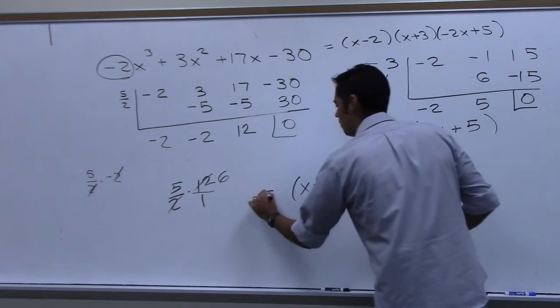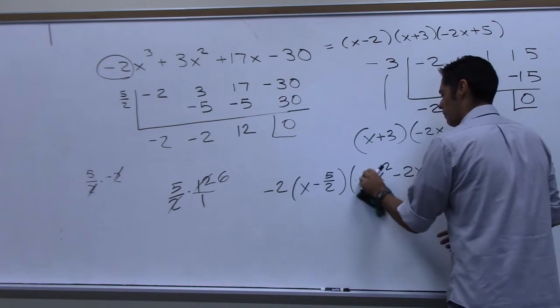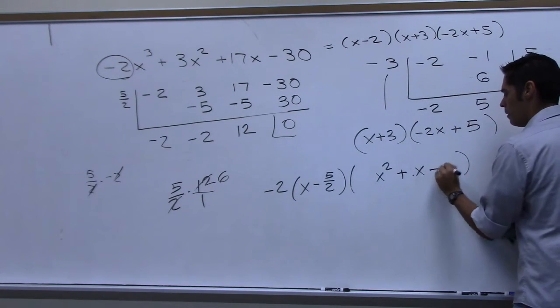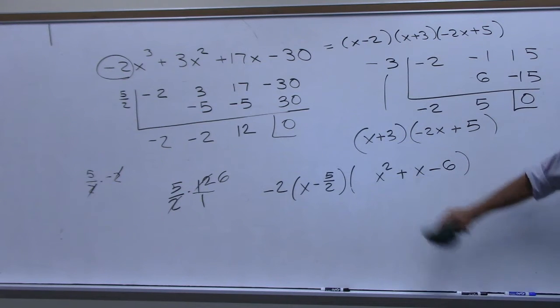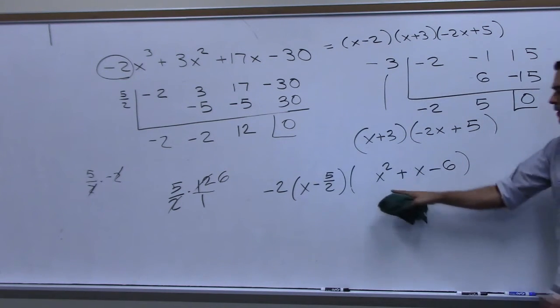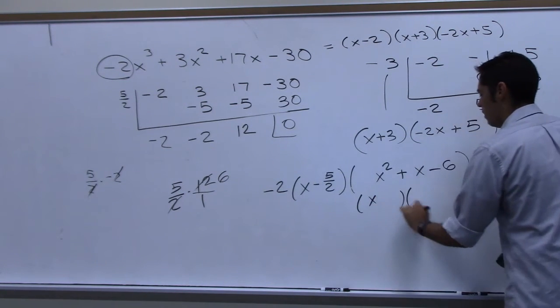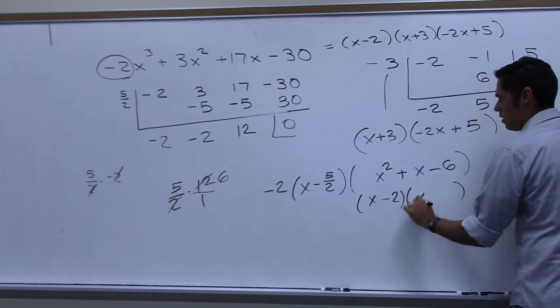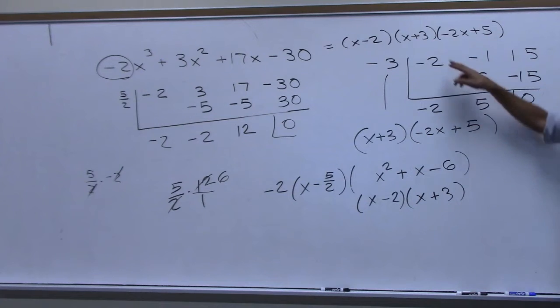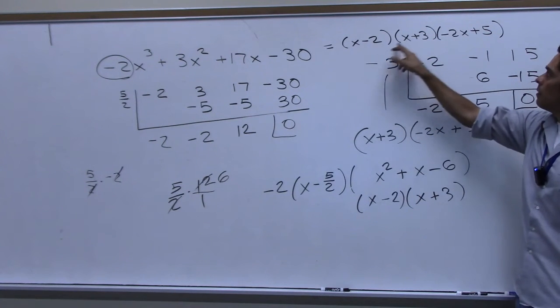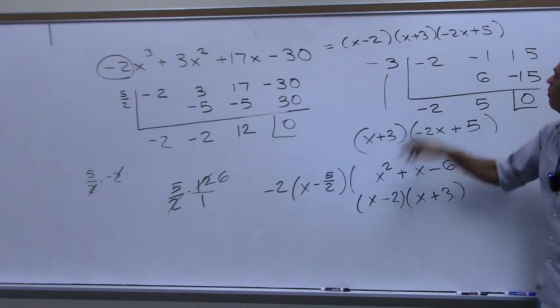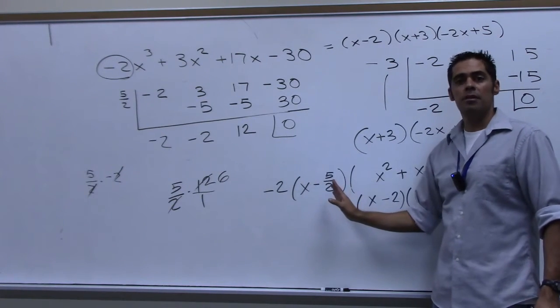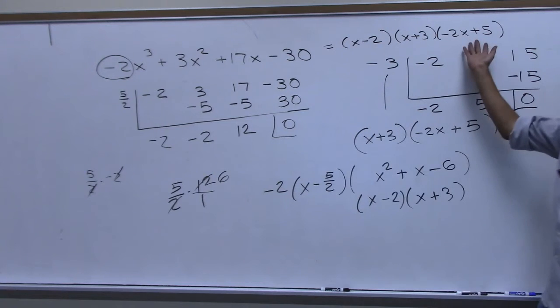Pull a negative two out, and then this factors to be what? Minus two plus three, which is this, right? This and this are here. What about this? Do we have this? Distribute the negative two back through? This one. Here, here, and you get back this.